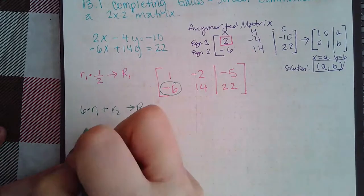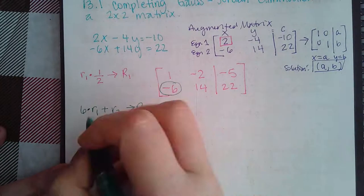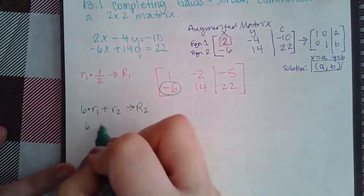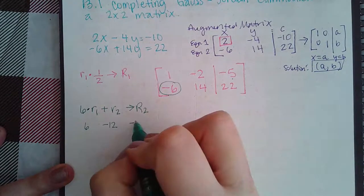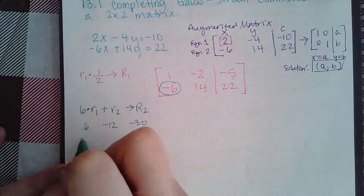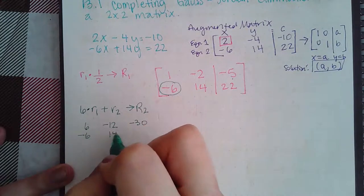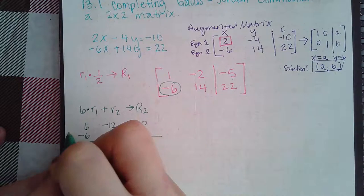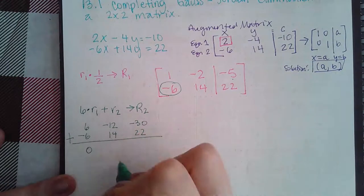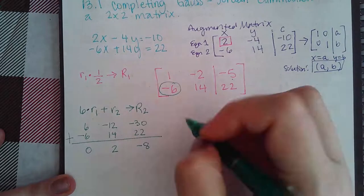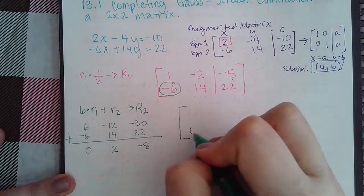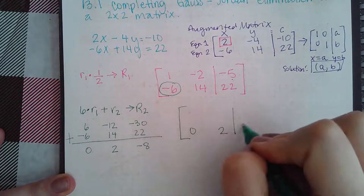So, I'm going to do the math over here on the side. That times 6 is 6. This guy times 6 is negative 12. This entry times 6 is negative 30. And the row 2 elements are going to go right underneath. Now, when I add these together, that's going to give me 0, positive 2, and negative 8. And so, my new matrix is going to be 0, 2, and negative 8.